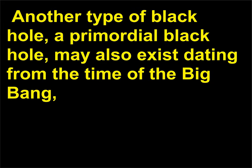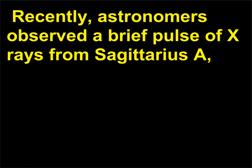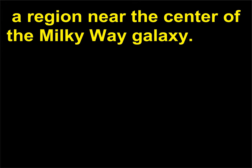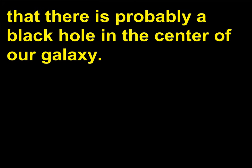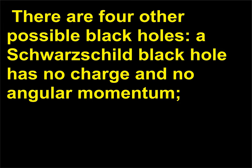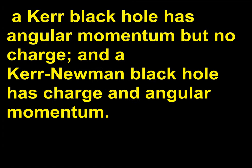Another type of black hole, a primordial black hole, may also exist dating from the time of the Big Bang, when regions of gas and dust were highly compressed. Recently, astronomers observed a brief pulse of X-rays from Sagittarius A, a region near the center of the Milky Way galaxy. The origin of this pulse and its behavior led scientists to conclude that there is probably a black hole in the center of our galaxy. There are four other possible types of black holes: a Schwarzschild black hole has no charge and no angular momentum; a Reissner-Nordström black hole has charge but no angular momentum; a Kerr black hole has angular momentum but no charge; and a Kerr-Newman black hole has charge and angular momentum.